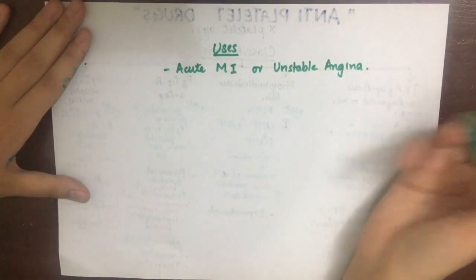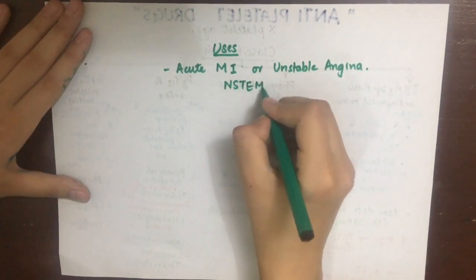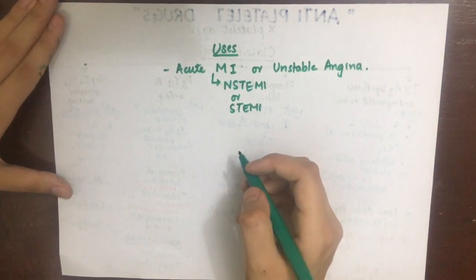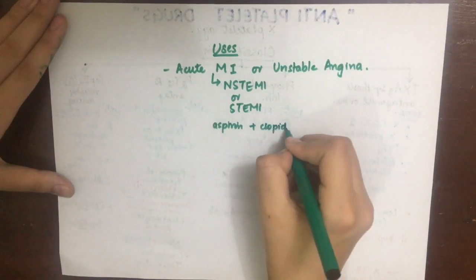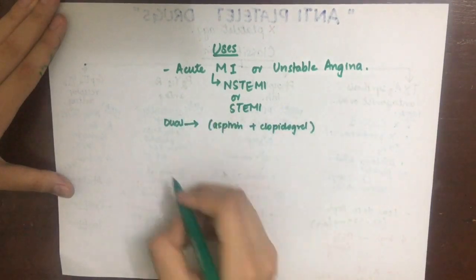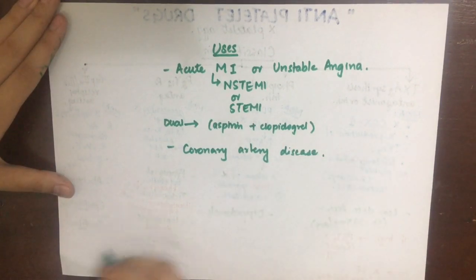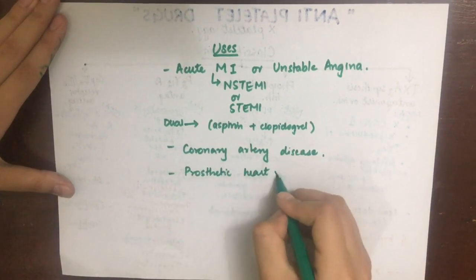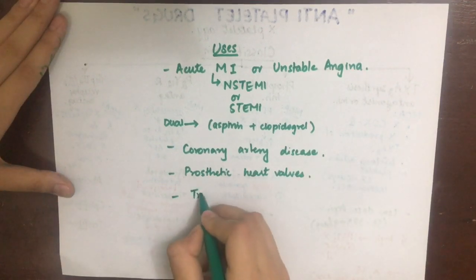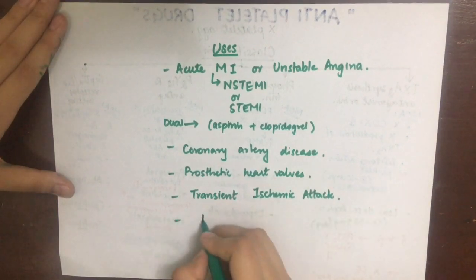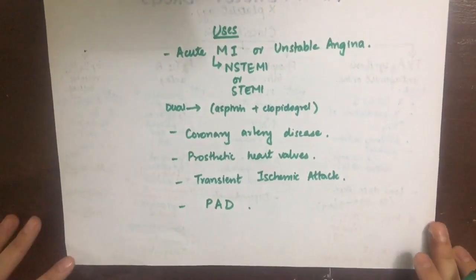The uses of antiplatelet drugs include acute MI and unstable angina — both non-ST elevation MI and ST elevation MI — where they are given mostly as dual therapy of aspirin and clopidogrel. They can also be used in coronary artery disease, where they decrease MI occurrence, stroke, and mortality post-MI. Additional uses include prosthetic heart valves to prevent valve thrombosis and thromboembolism, transient ischemic attack, and peripheral artery disease.